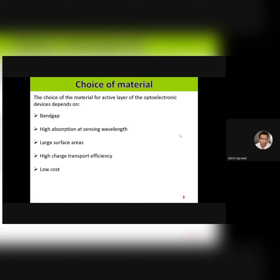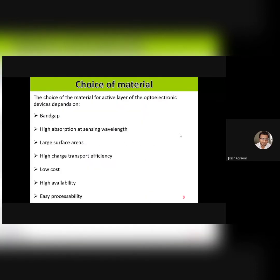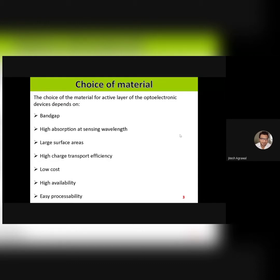Also, the material should be of low cost, which is possible if it is easily available and the processability cost is low — easy to fabricate. If you look at conventional semiconductors like silicon or germanium, their band gap is around 1.3 eV or below. So we cannot use these semiconducting materials for the detection of the UV region, where the band gap needs to be more than 3 electron volts. Therefore, we require other materials which can work in that region, specifically for UV and visible. We are looking towards metal oxide semiconductors.